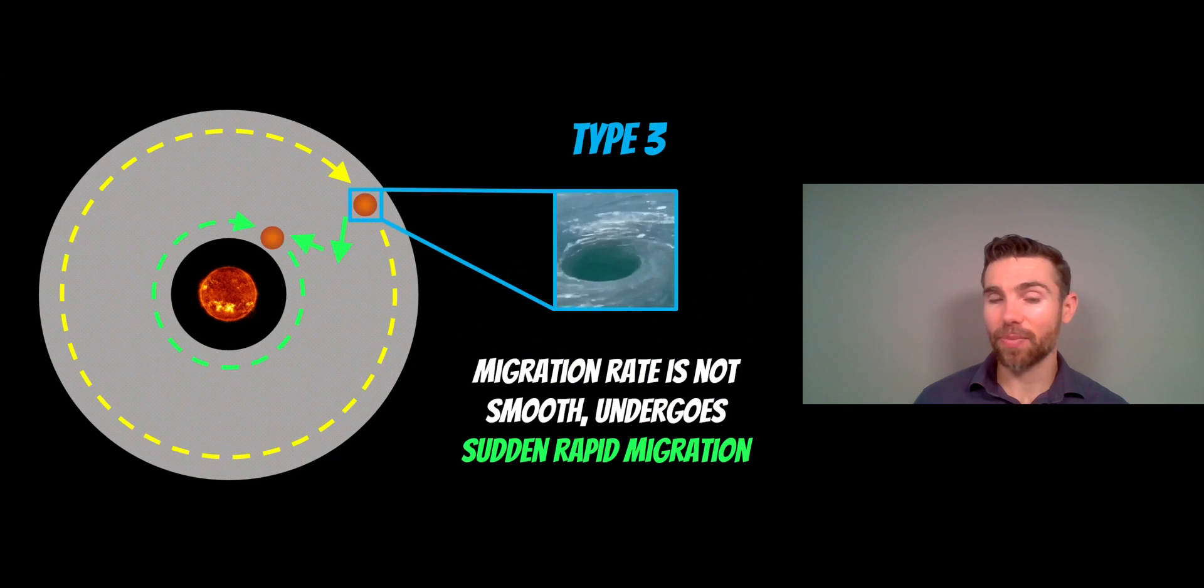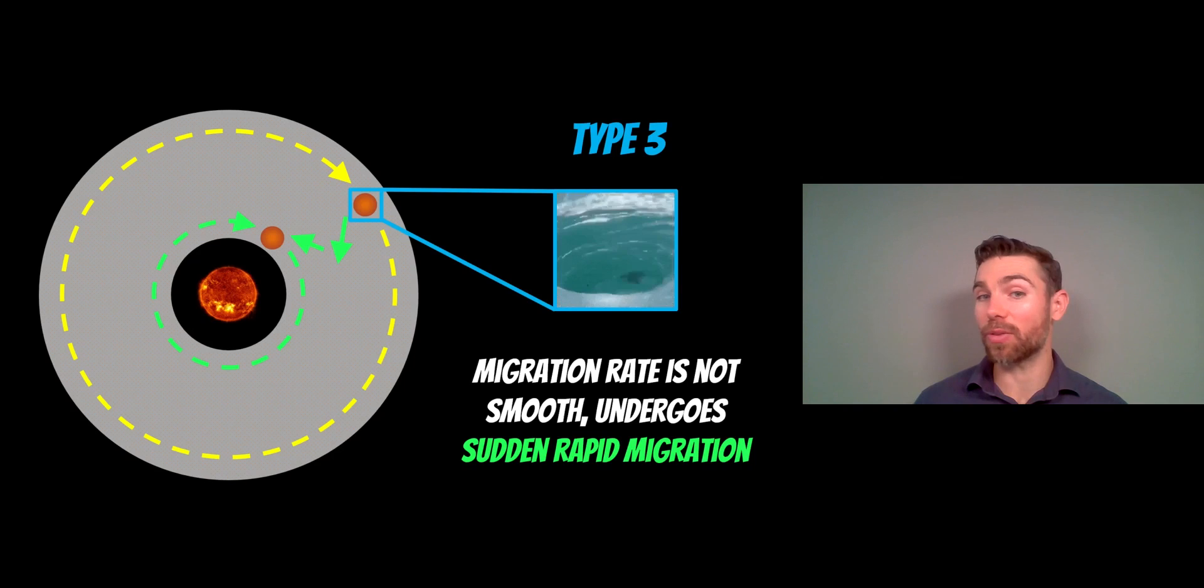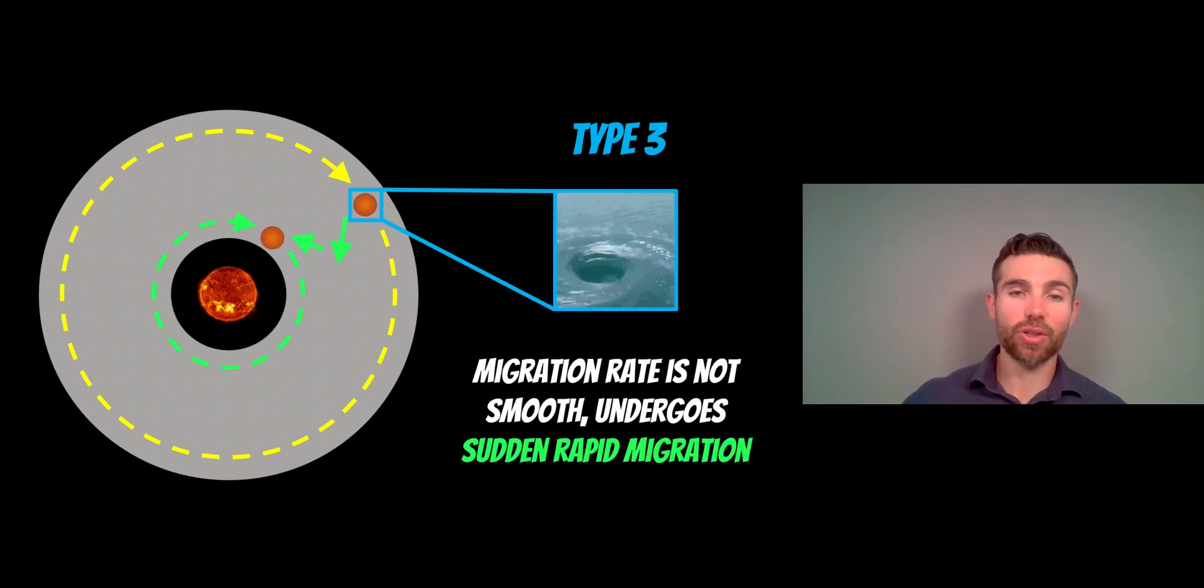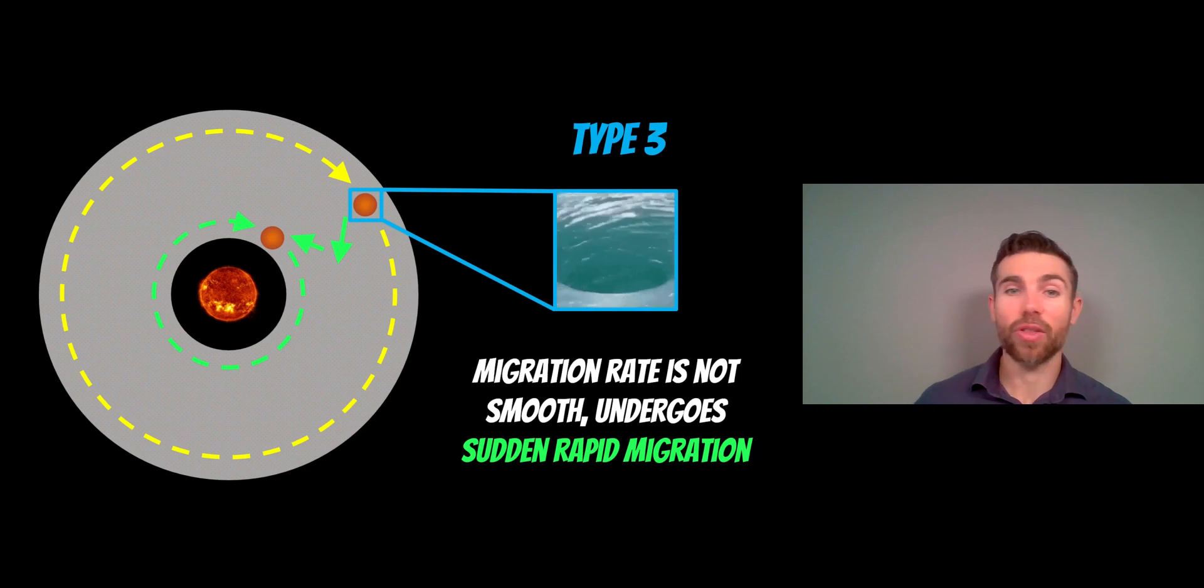Type 3, however, is the opposite. It may undergo a normal Type 1 migration where it's a bit smooth, and then it interacts with a vortex or some of this turbulent flow. Then you get a sudden rapid migration which then stops again, and it happens in kind of bursts. You get sudden inward migration or outward migration, depending on the specifics of the system, mostly inward. You just get these sudden rapid migrations due to the interaction with this more turbulent flow that is not present in the Type 1 migrations.